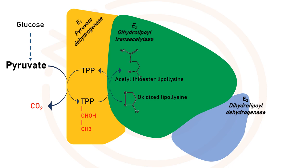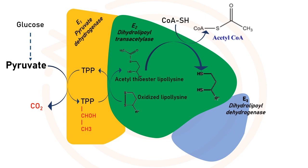The third reaction is a transesterification in which the sulfhydryl group of coenzyme A replaces the sulfhydryl group of acetyl thioester lipoyl to yield acetyl coenzyme A and the fully reduced dithiol form of lipoyl. The fourth reaction is carried out by dihydrolipoyl dehydrogenase, which promotes the transfer of two hydrogen atoms from the reduced lipoyl to the FAD prosthetic group of dihydrolipoyl dehydrogenase, restoring the oxidized form of lipoyl.